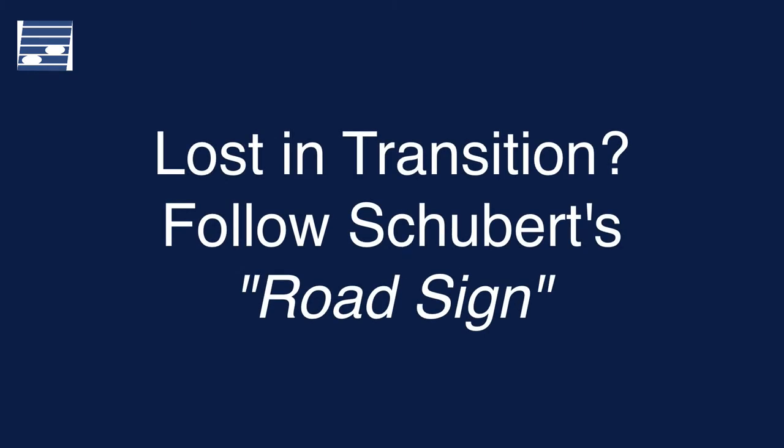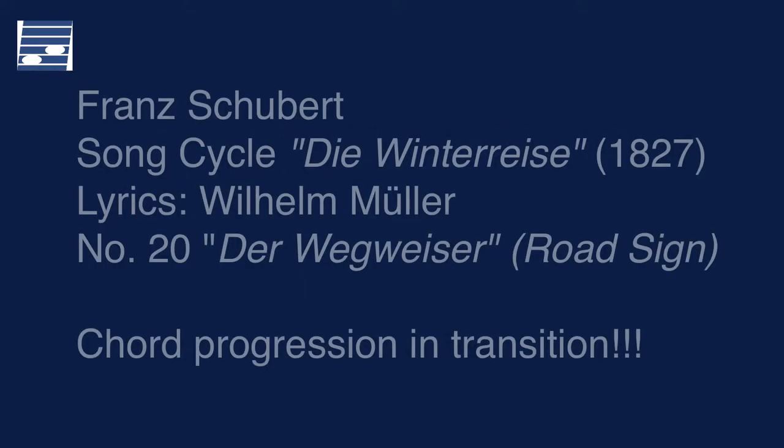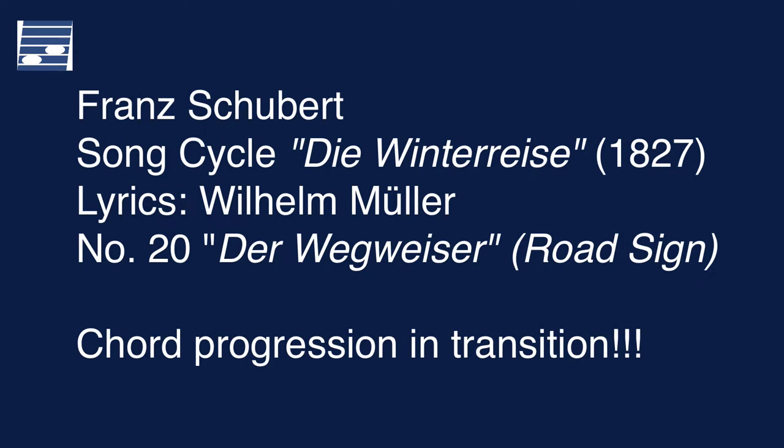Hello! Do you sometimes feel lost in transition? Well, then you might want to follow Schubert's road sign. In this video tutorial we will look at a song from the Franz Schubert song cycle Die Winterreise, composed in the year 1827, with lyrics by Wilhelm Müller. Song number 20, Der Wegweiser, has a most fascinating chord progression in the transition section that we will study in detail.